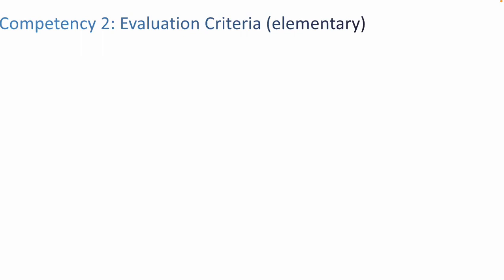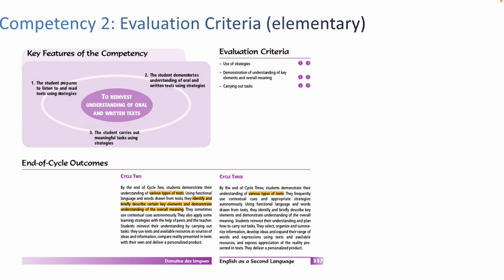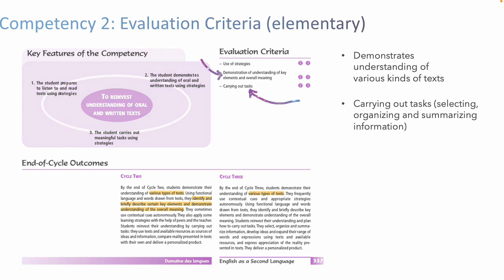Let's look at the evaluation criteria according to the program for elementary. This page is taken directly from the Quebec Education Program, the PFEQ in French, and looks at competency two. There's a description of the end-of-cycle outcome — what students are supposed to be doing in grades three and four, and in grade five for competency two. The kinds of things they're supposed to do are identify and describe key elements and demonstrate overall meaning, which is reflected in the evaluation criteria: understanding key elements and overall meaning of different kinds of texts. They're also starting to carry out reinvestment tasks — selecting, organizing, and summarizing information.